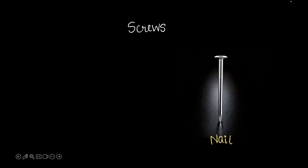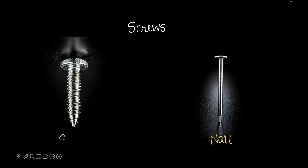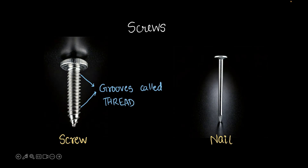Let's move on to discussing screws. This is a nail — it's smooth and doesn't have any grooves. On the other hand, if you look at a screw, you can see that there are small grooves on it. These grooves are called thread, and this is what makes a screw different from a nail.